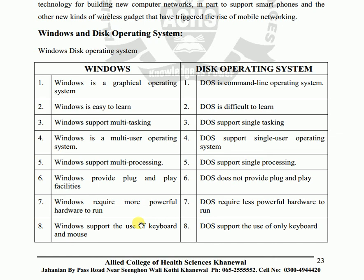Windows requires more powerful hardware to run, while DOS requires less hardware. Finally, Windows supports both keyboard and mouse input, while DOS only accepts commands through the keyboard. That is the difference between Windows and Disk Operating System. Hopefully you can prepare this lecture. Stay at home.